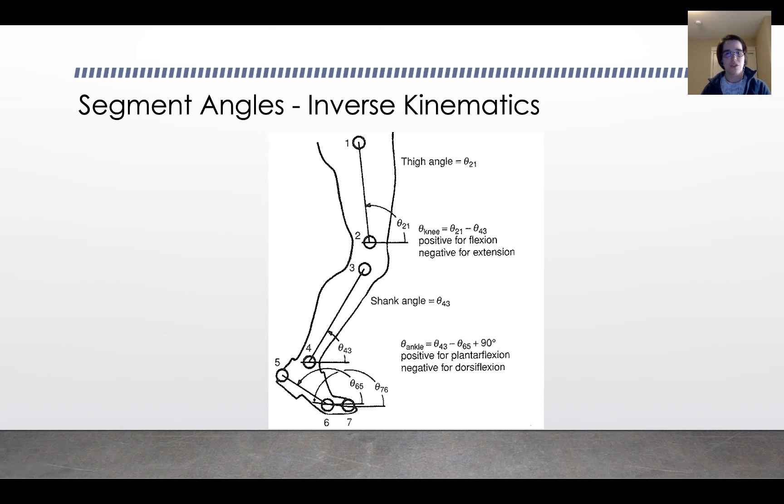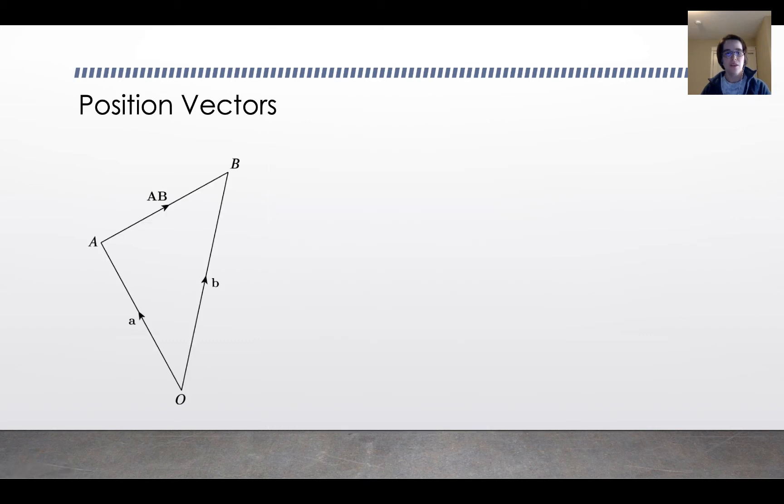So how do you do this with your data? Here's some position vectors, and this is just a review from statics where you first learned about position vectors. You can define vector AB as the position, the x-coordinates and the y-coordinates, B minus A. That's the vector from A to B.